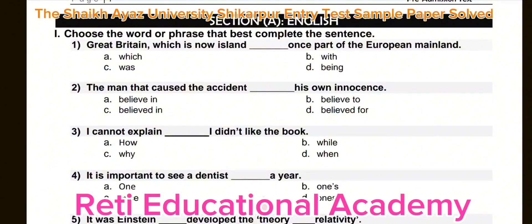Question number one: Great Britain, which is now an island, dash once part of the European mainland. Options: A) which, B) with, C) was, D) being. The correct answer is 'was'. Great Britain, which is now an island, was once part of the European mainland.